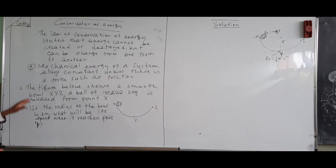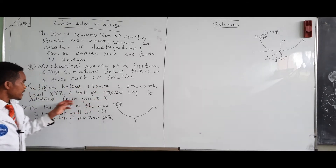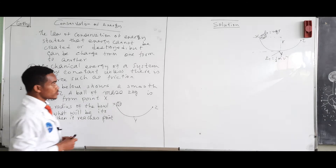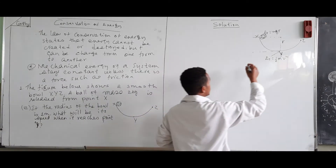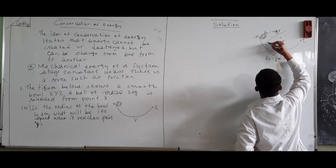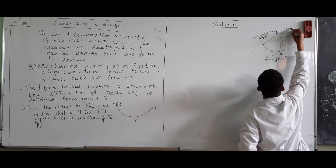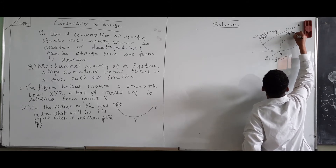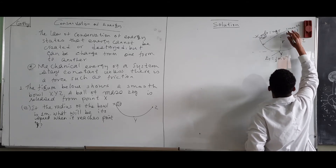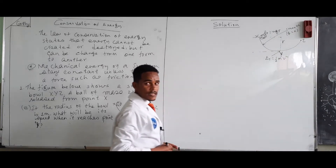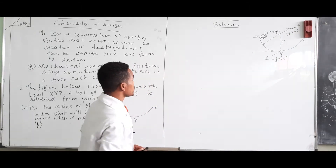The problem says the figure below shows a smooth bar XYZ. Smooth means frictional force equals zero, so there is no energy dissipated. In this case, mechanical energy is conserved.